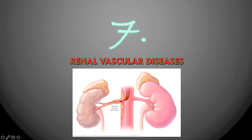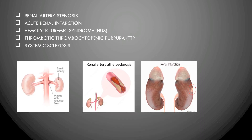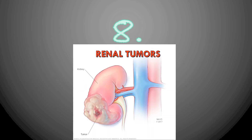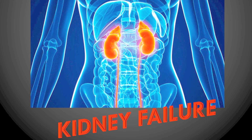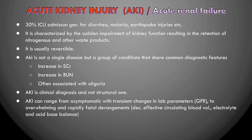Renal vascular diseases include renal artery stenosis — where reduced arterial aperture decreases blood flow causing kidney damage — and acute renal infarction from atherosclerosis or thromboembolism blocking the renal arteries, similar to myocardial infarction. Other conditions include hemolytic uremic syndrome, thrombotic thrombocytopenic purpura (TTP), and systemic sclerosis. Renal tumors — both benign and malignant — also cause kidney failure, to be covered in the next video.